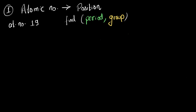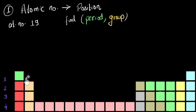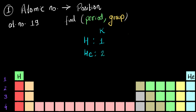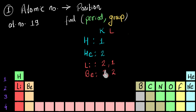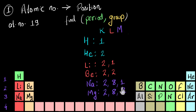You would recall from the video on the modern periodic table that as we go to the next period, electrons get added to the next shell. For example, elements of the first period — hydrogen and helium — have electrons only in the first shell, the K shell. Elements of the second period — lithium, beryllium, boron, and so on — have electrons in two shells, K and L. Elements of the third period — sodium, magnesium, aluminium — have electrons in three shells: K, L, and M. This keeps continuing: with every new period, electrons get added to the next shell. The fifth period will have electrons in five shells.